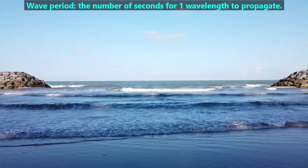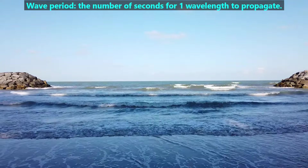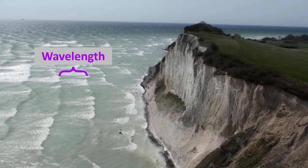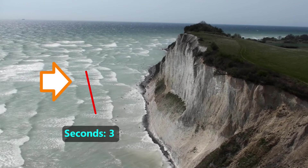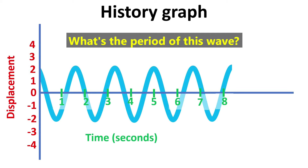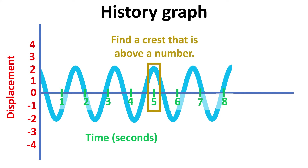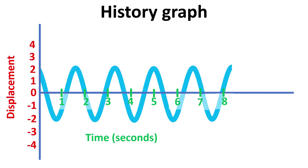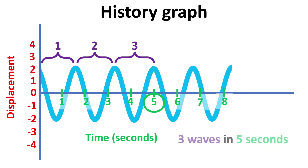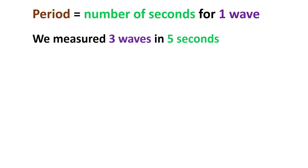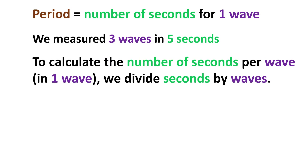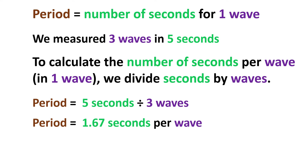Next, we'll discuss wave period. Wave period is the number of seconds for one wavelength to propagate. These ocean waves have a wavelength that spans the distance between adjacent crests. To measure the period, we make a vertical line at the front end of a wave, then count how many seconds elapse until the back end of the wave crosses that line. In this case, the period is 6 seconds. To find the period more precisely from a graph, we find a crest directly above a hash mark — in this case, above the 5-second mark — then count the number of waves in the interval from 0 to 5 seconds. Since the definition of wave period is the number of seconds in one wave, we divide the number of seconds by the number of waves. In this case, that's 5 seconds divided by 3 waves, which equals 1.67 seconds per wave. The symbol for period is a capital T.